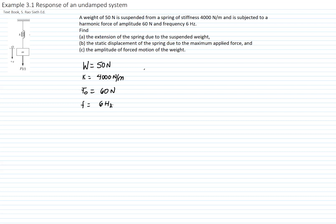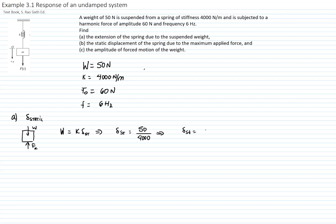Let's now calculate the static deflection of the spring due to weight. We analyze our free-body diagram in equilibrium: we have the weight, we have the spring force, and those are equal. That gives us the static displacement of the spring due to the weight. We solve for the static displacement — it's the weight over the constant, which is 50 over 4000 — and that gives me a static displacement of 0.0125 meters.